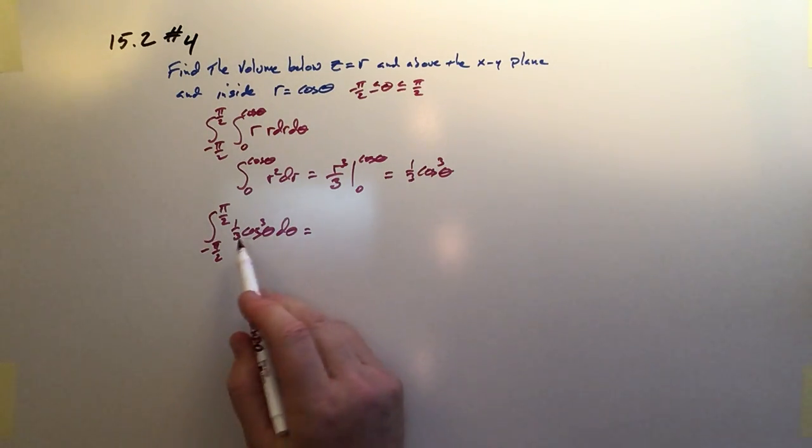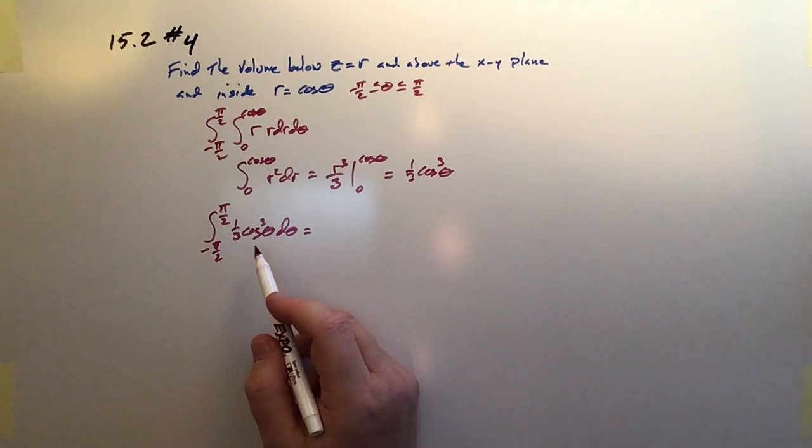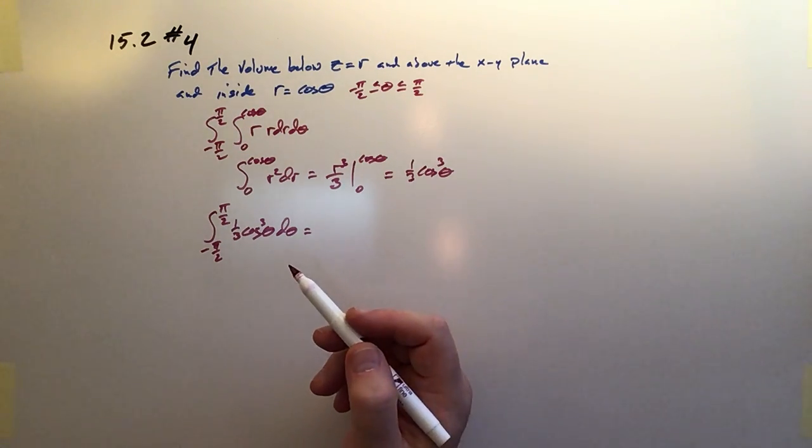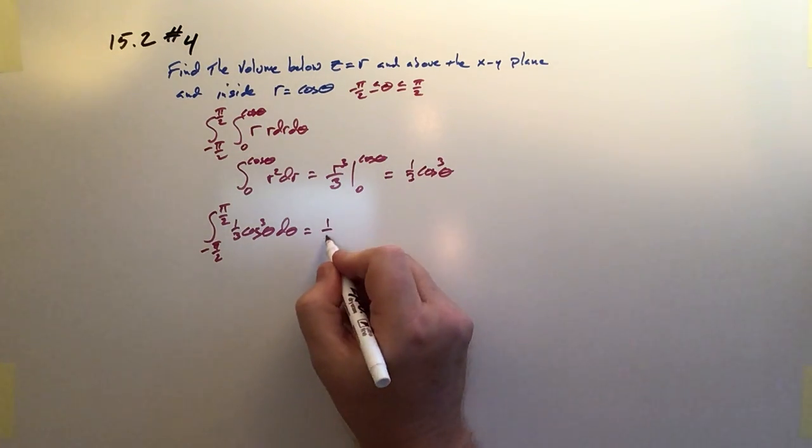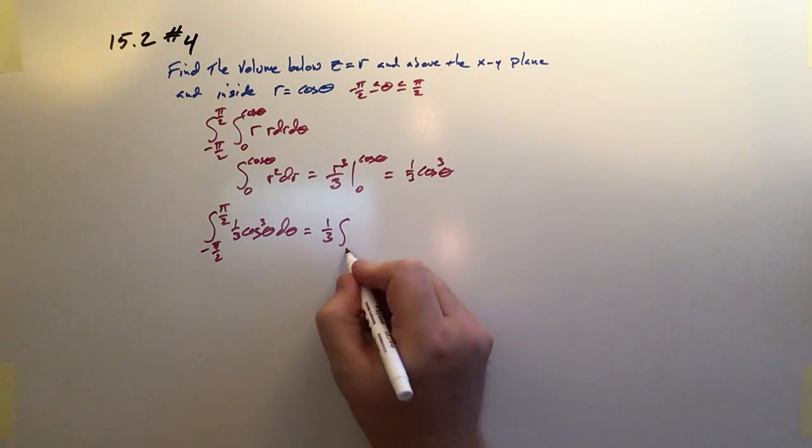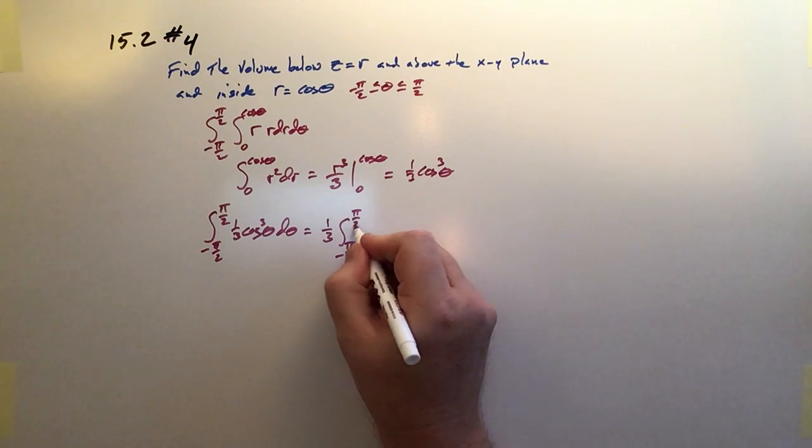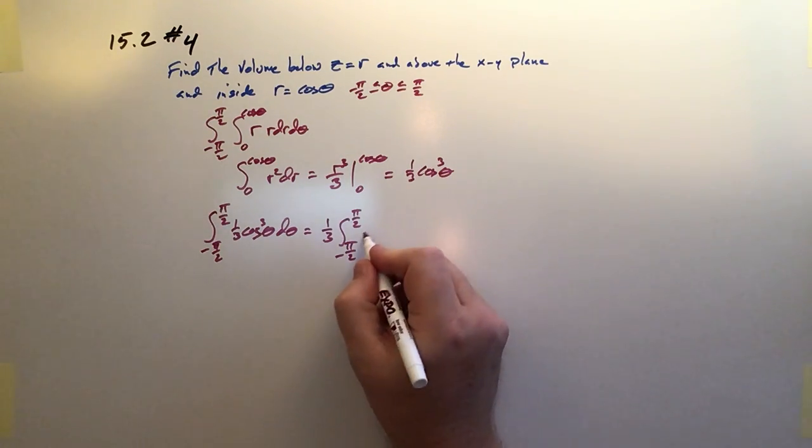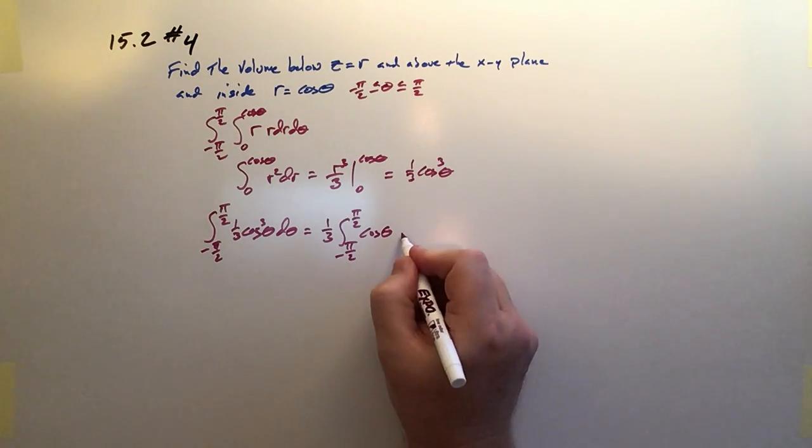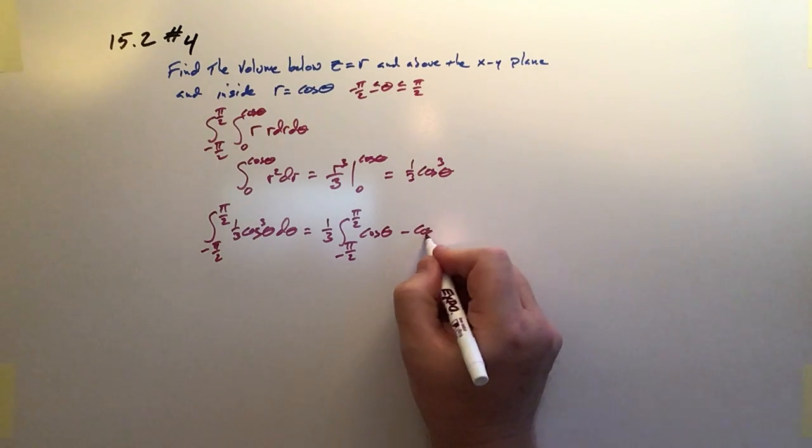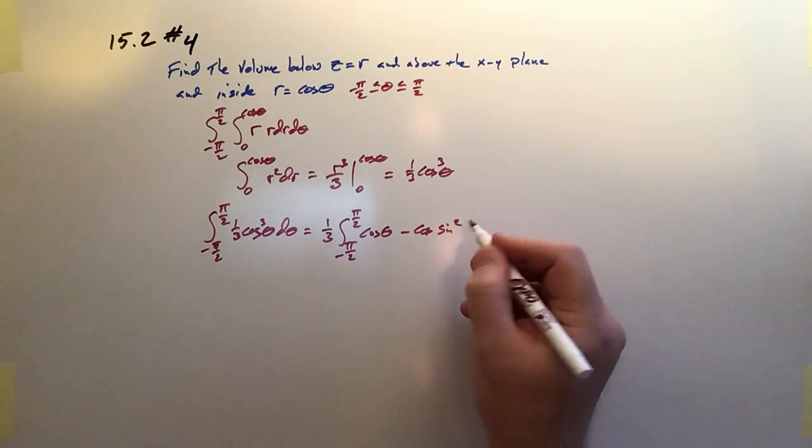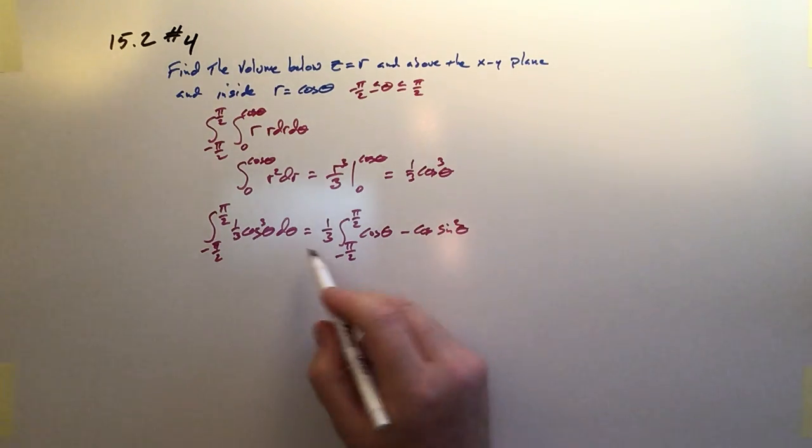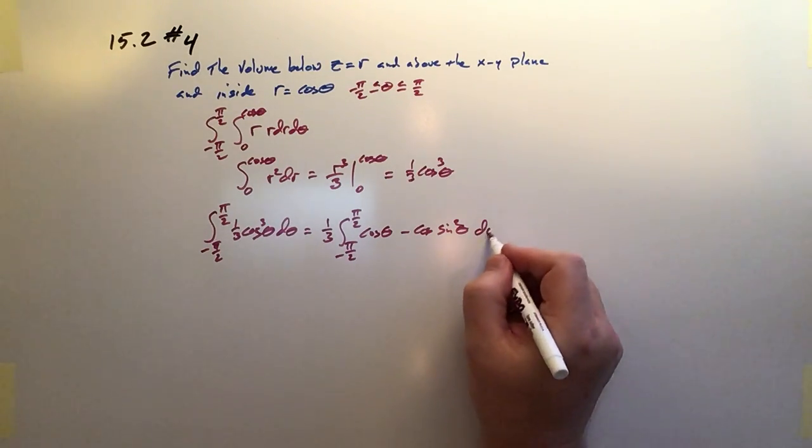Okay, I ended up breaking this apart into two integrals. So what we ended up really integrating was one third integral from negative pi over 2 to pi over 2 of cosine of theta minus cosine sine squared theta by using a Pythagorean substitution d theta.